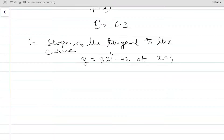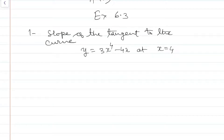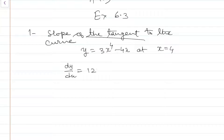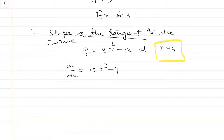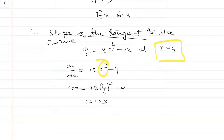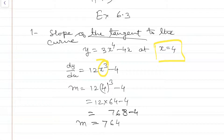Question number 1: Find the slope of the tangent to the curve y = 3x⁴ - 4x at x = 4. We find the first derivative dy/dx = 12x³ - 4. To find the slope at x = 4, we substitute: m = 12(4)³ - 4 = 12 × 64 - 4 = 768 - 4 = 764. This is the slope of the tangent at that point.